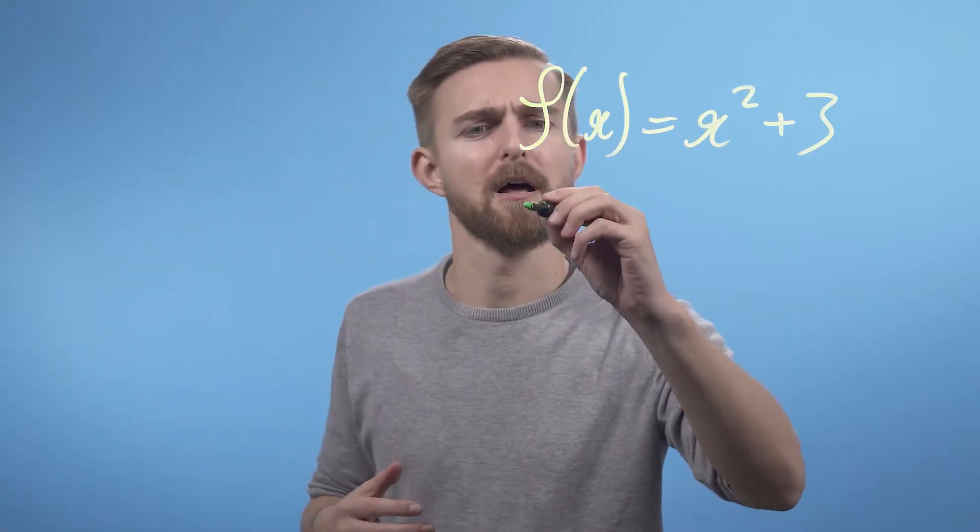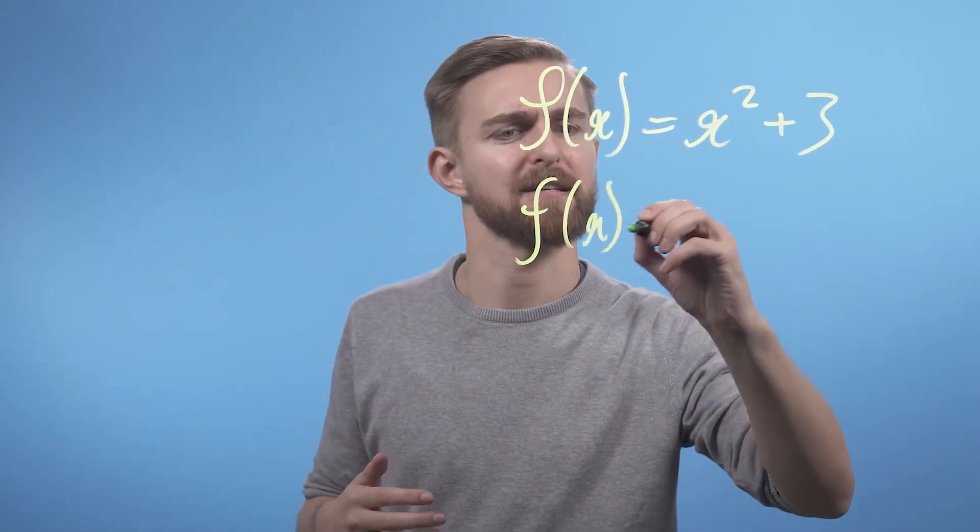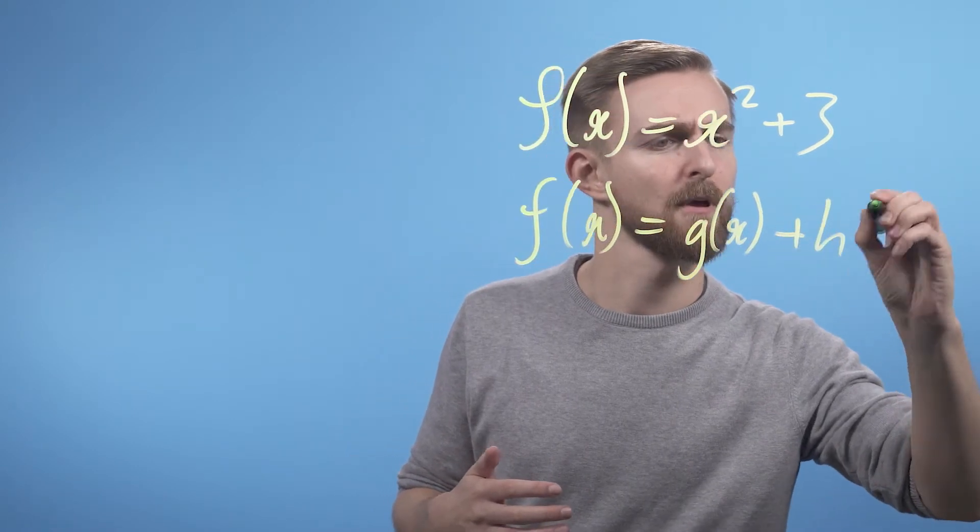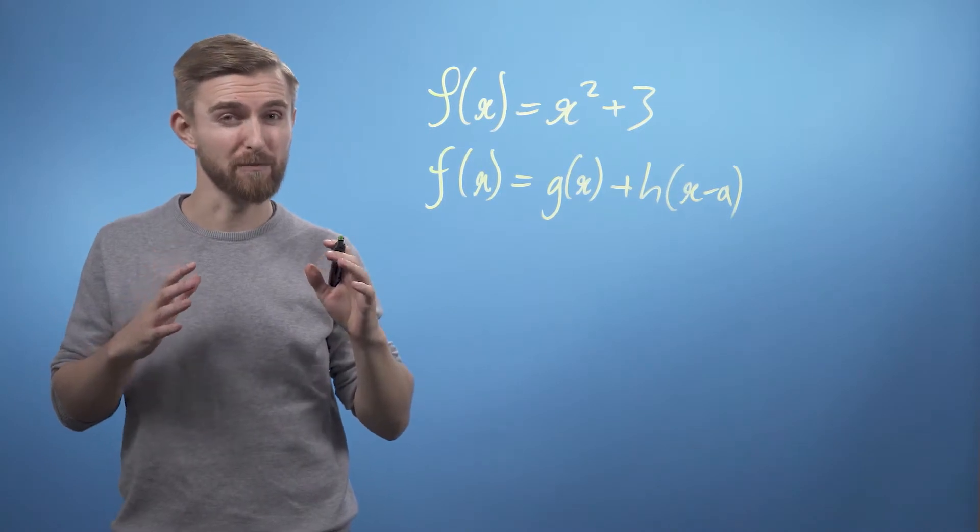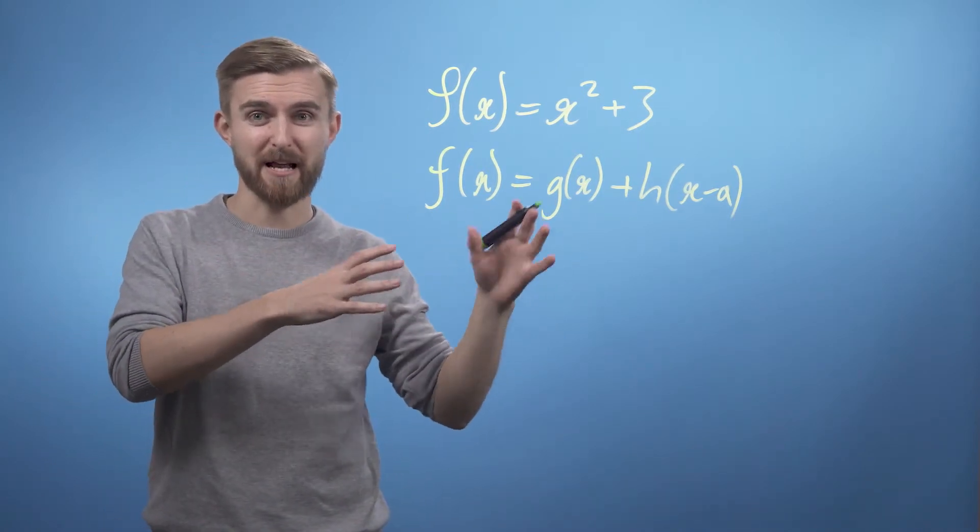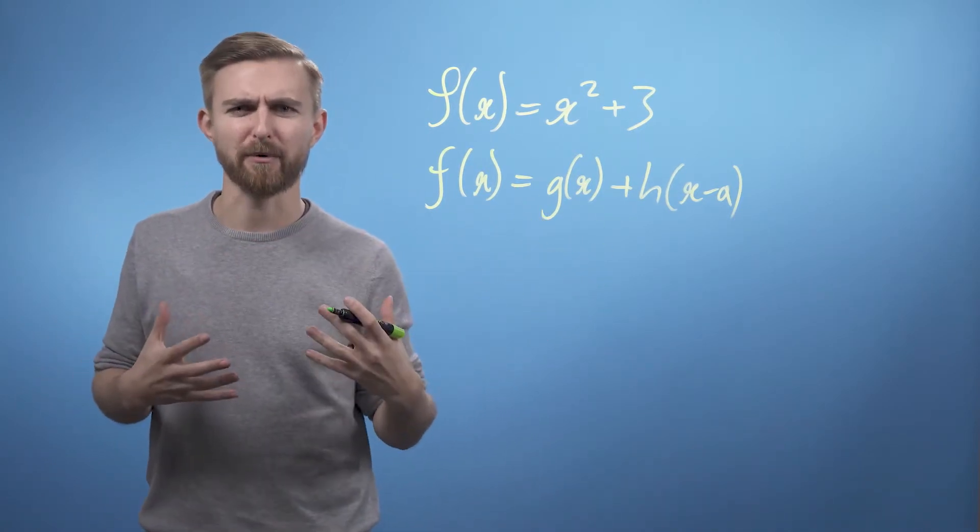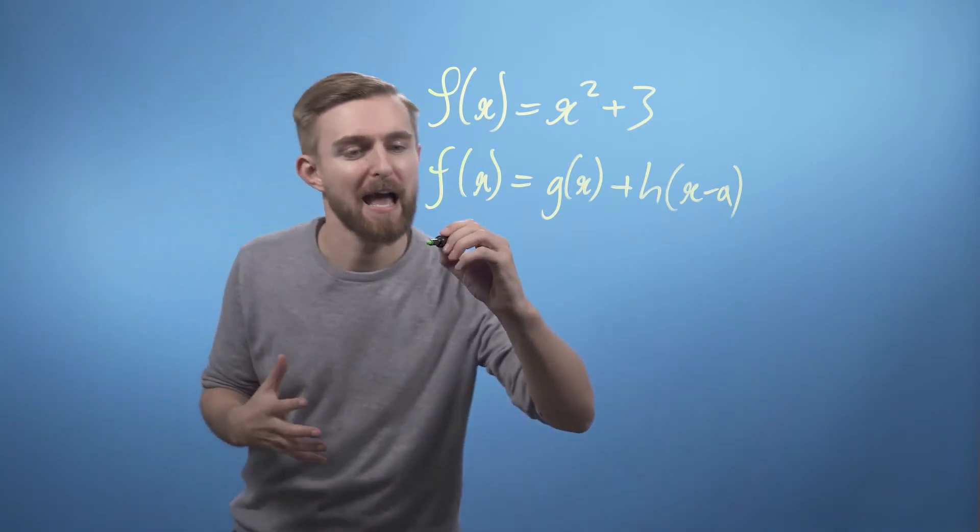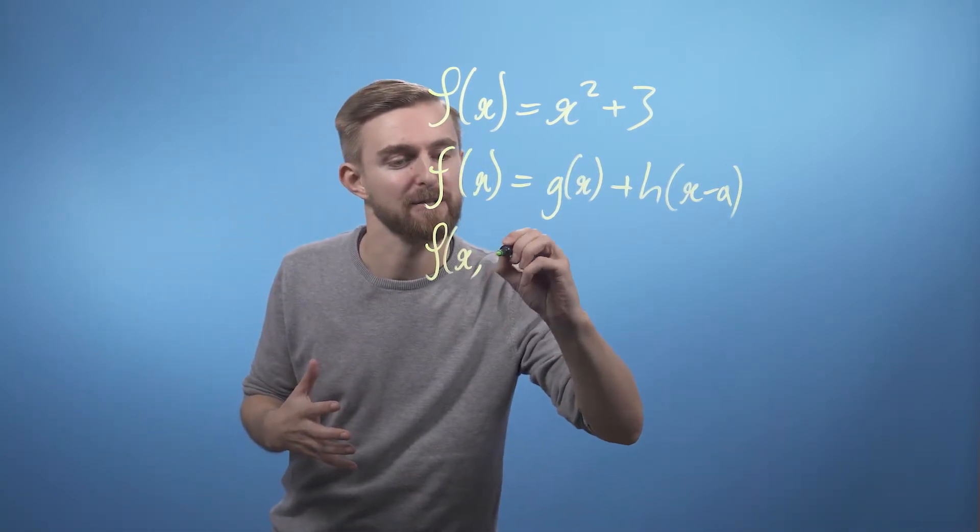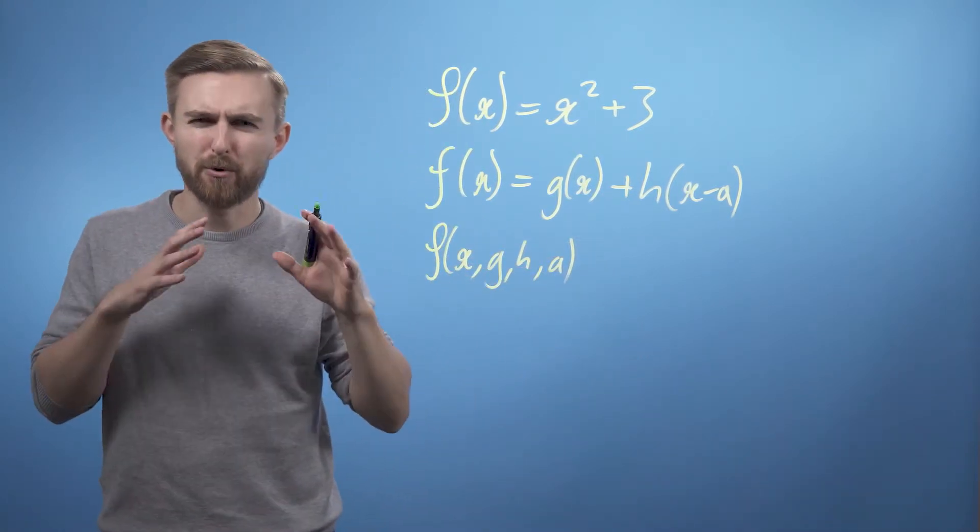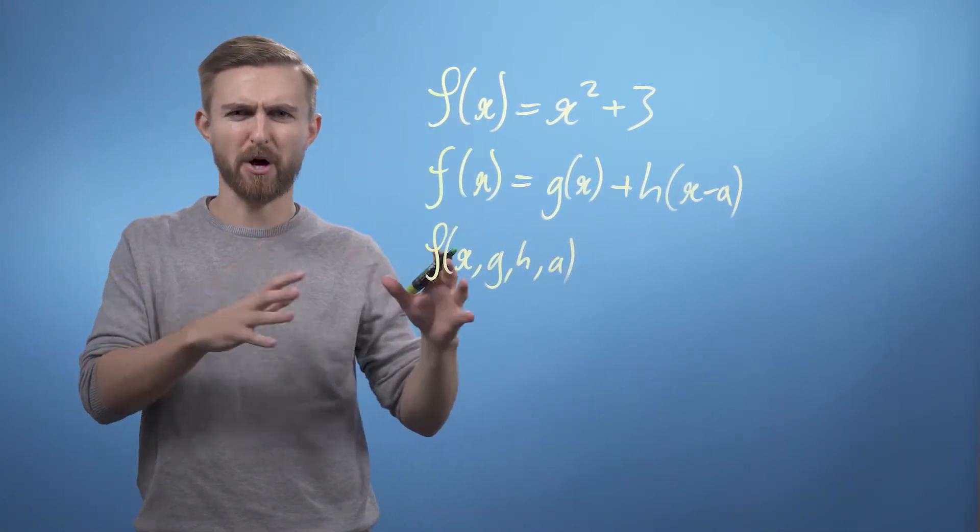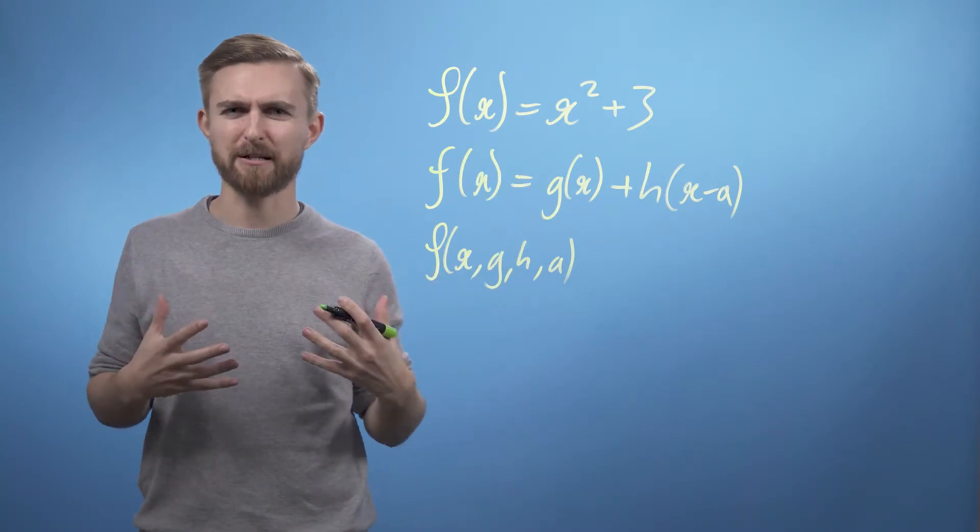For example, f of x equals this thing over here. You can assume that g, h, and a are all not variables. Otherwise, I would have to write f of x, g, h, and a. But you could only know for sure what was going on here if it was explained to you with more context. For example, is g a function being applied to x? What about h and a over here? Maybe they're both just constants.